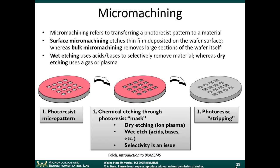The basic concept of micromachining is this: you have a photoresist micro-pattern and you want to transfer that pattern to a layer underneath it. You create a photoresist pattern first using lithography, and then you can use a variety of etching techniques to transfer that pattern into the material under it.